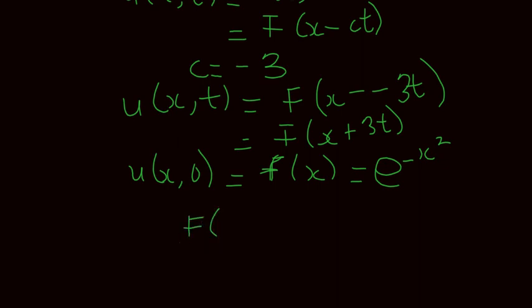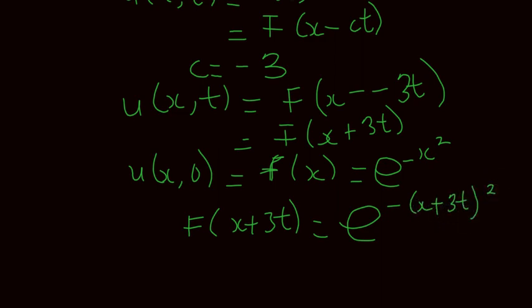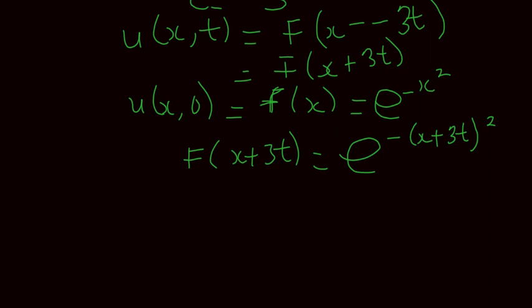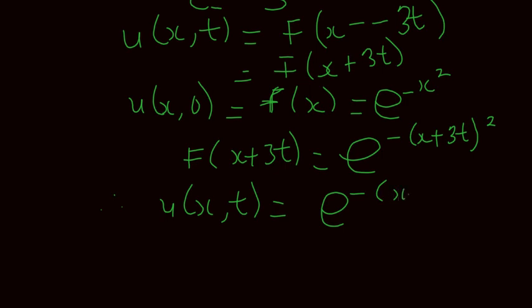If f of x is equal to e to the minus x squared, then f of x plus 3t is just going to be equal to e to the minus (x plus 3t) all squared. And since f of x plus 3t equals the solution u(x, t), I can conclude that the solution to the transport equation is e to the power minus (x plus 3t) all squared.